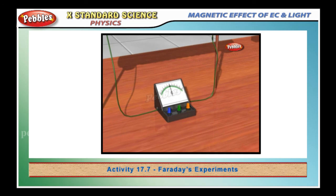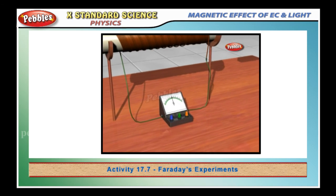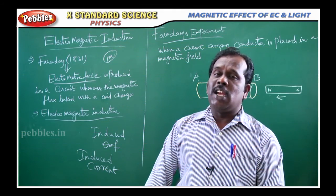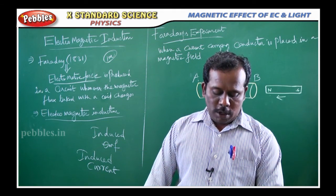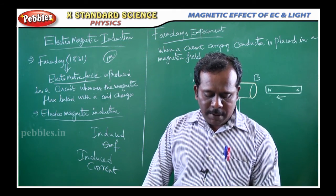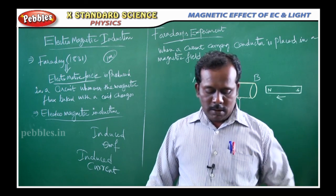It is thus clear that the motion of the magnet with respect to the coil produces an induced electromotive force, which sets up an induced electric current in the circuit.